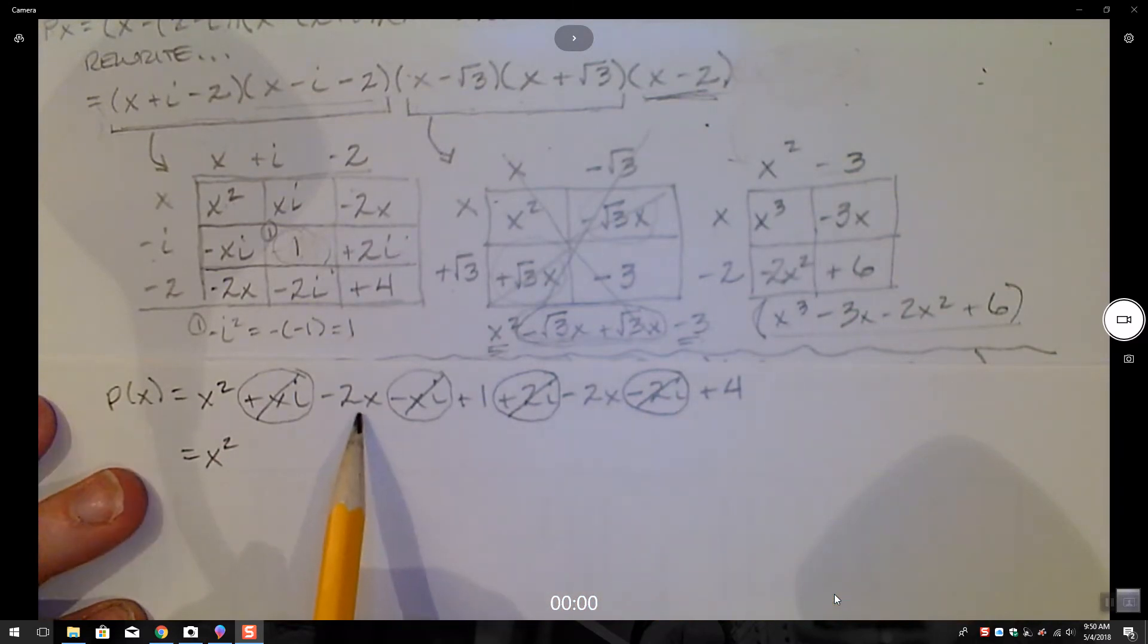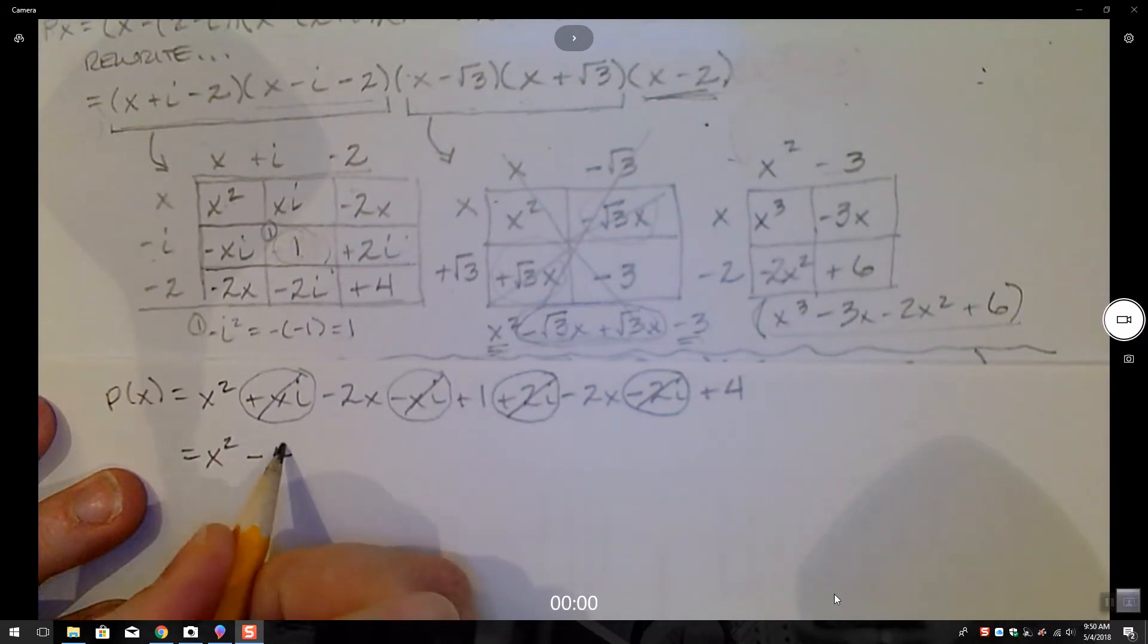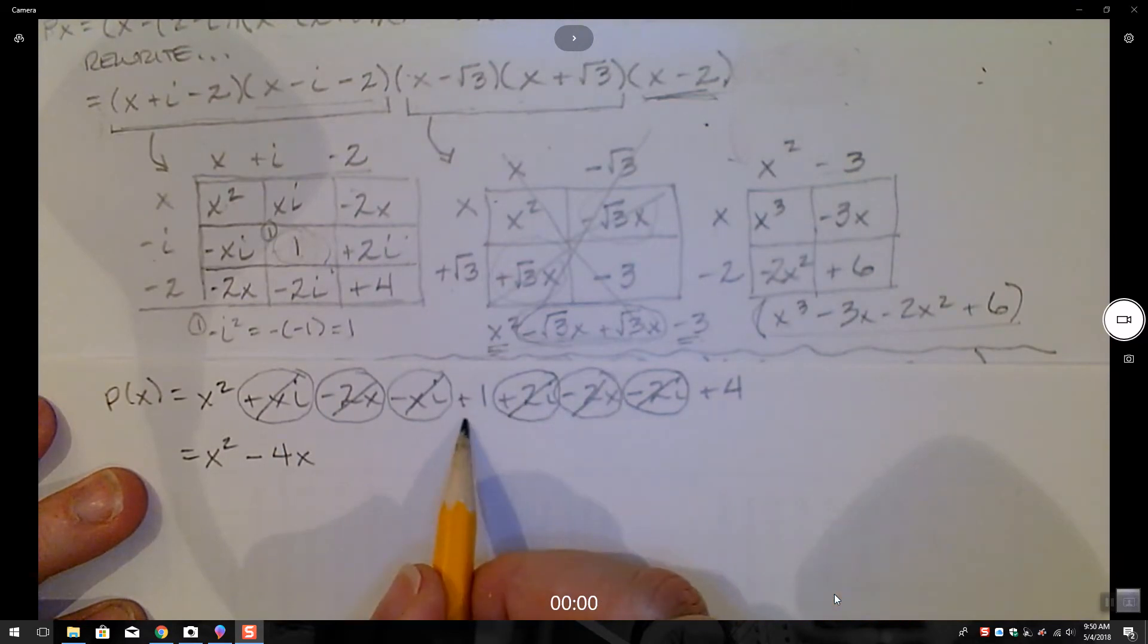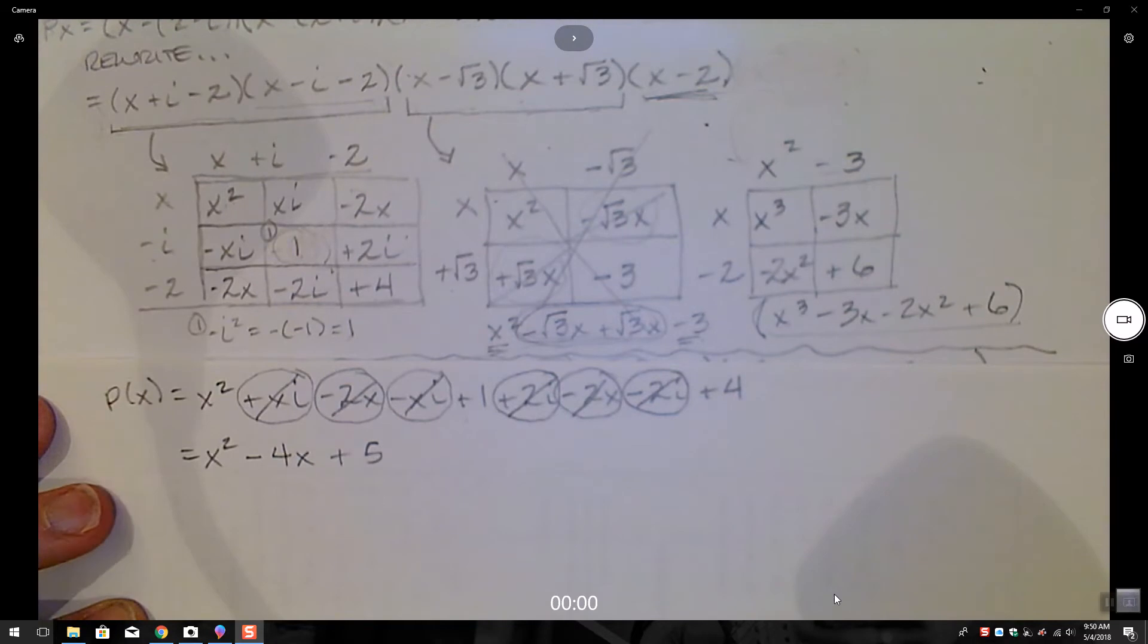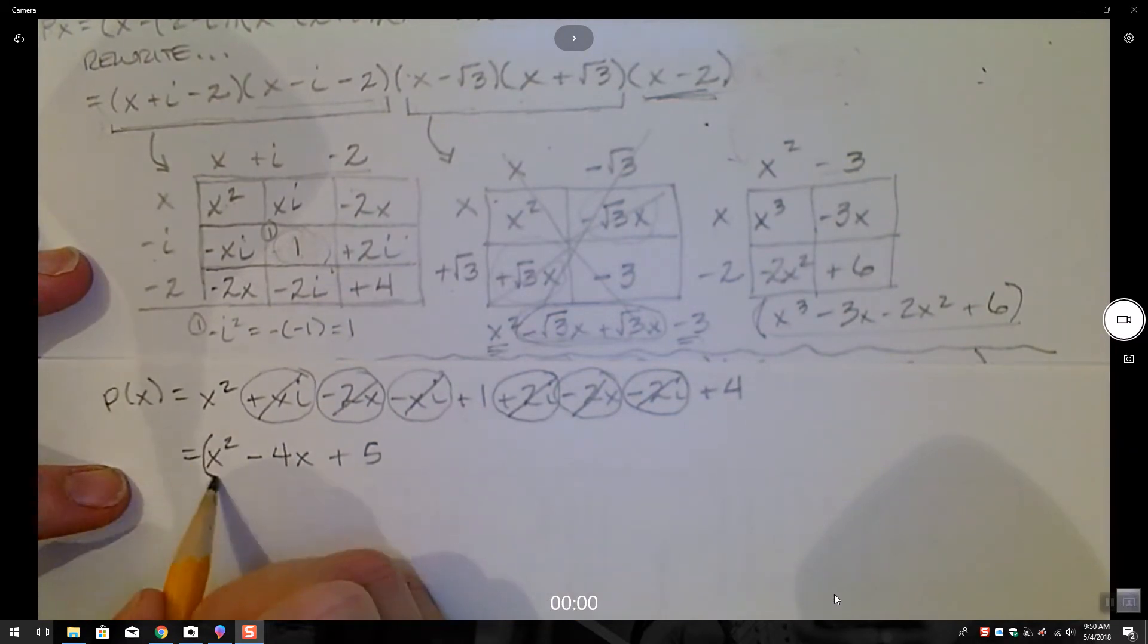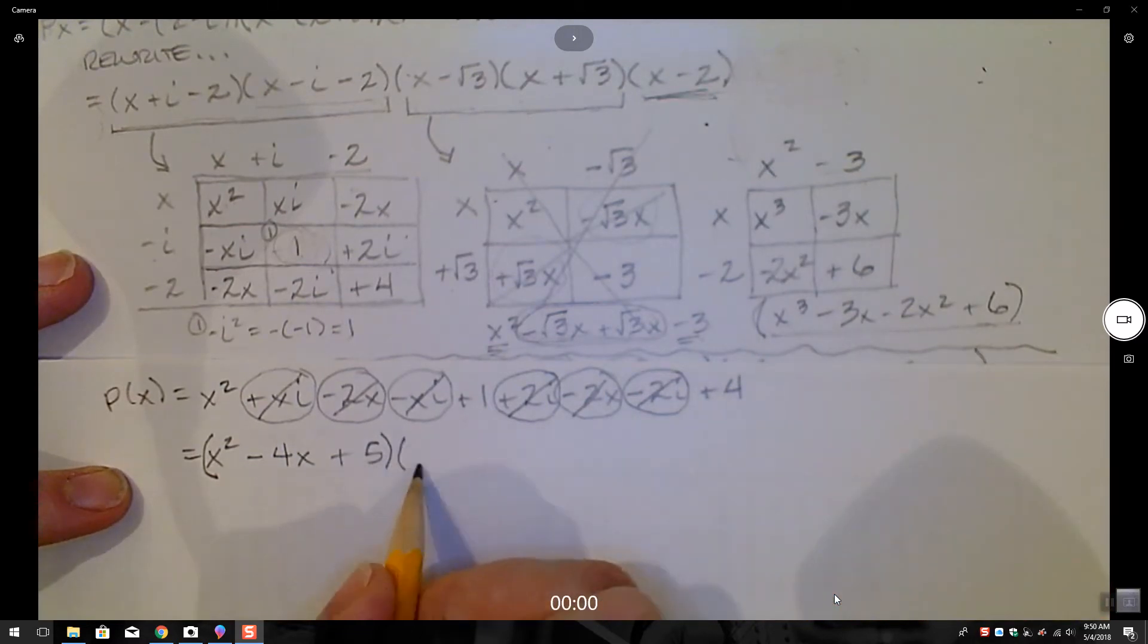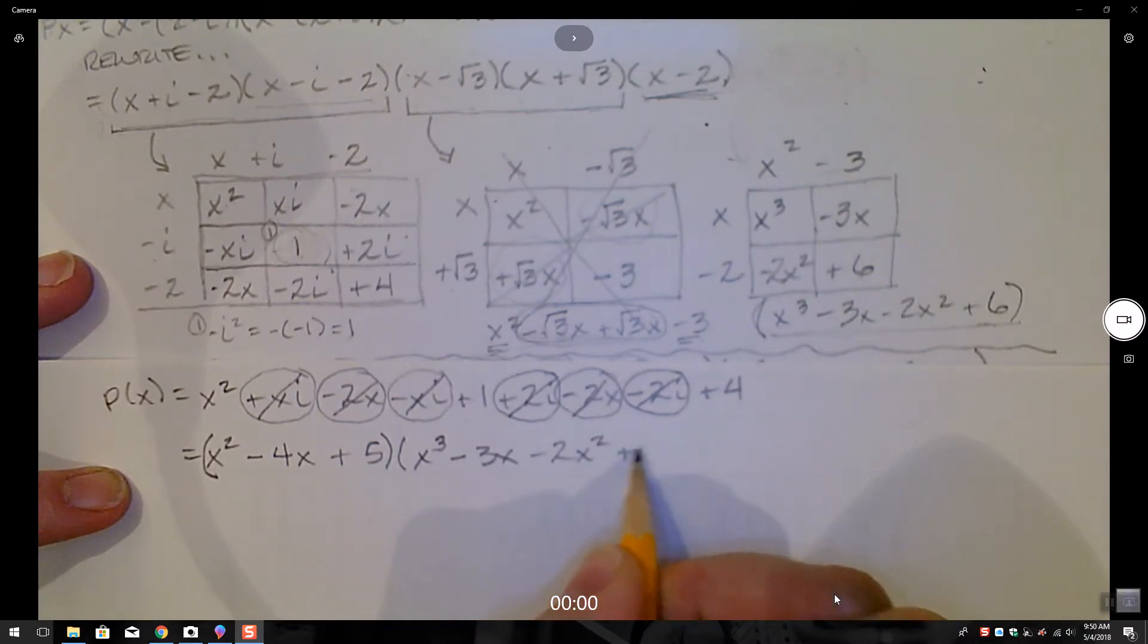Do I have any x terms? I do. These are going to end up being a minus 4x. And this is going to end up being a plus 5. Woohoo! Made that a lot simpler. And then I'm going to multiply this by this factor over here, which is x to the third minus 3x minus 2x squared plus 6.